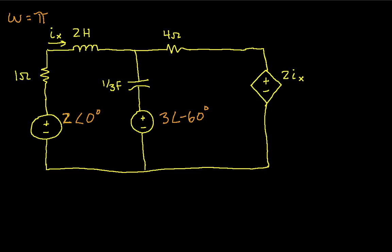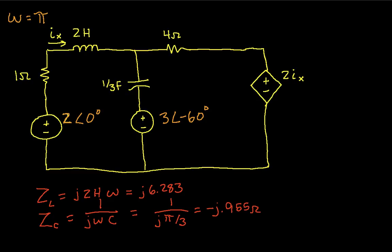Next step is to find the impedance of the inductor and the impedance of the capacitor. So the impedance of the inductor is J times 2 Henrys times omega, which in this case will be J times 6.283, where I just multiply 2 times omega, which is pi. The capacitor will be 1 over J omega C, which will be 1 over J times pi over 3. That's omega times C. And I work this out. I get minus J times 0.955 ohms. I should point out this is ohms as well.